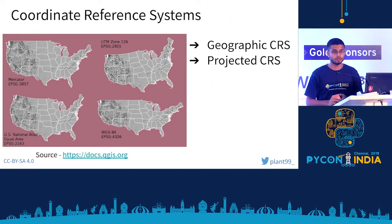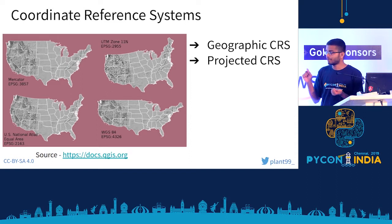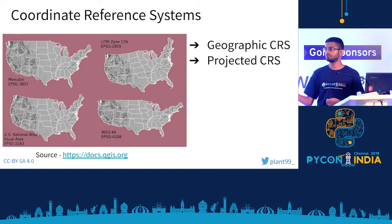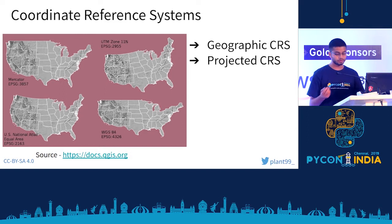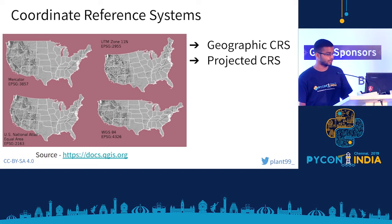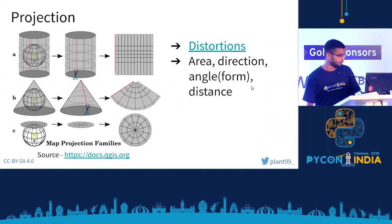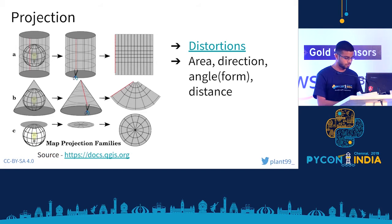A Coordinate Reference System (CRS) defines how the 2D projected map in your GIS relates to real places on earth. Each CRS defines the map projection. Look at maps of the United States — different CRS are used and distances or areas between places are not standard. You can't just measure a distance and multiply by map units. Knowing the CRS lets you correctly calculate area and distance between places.